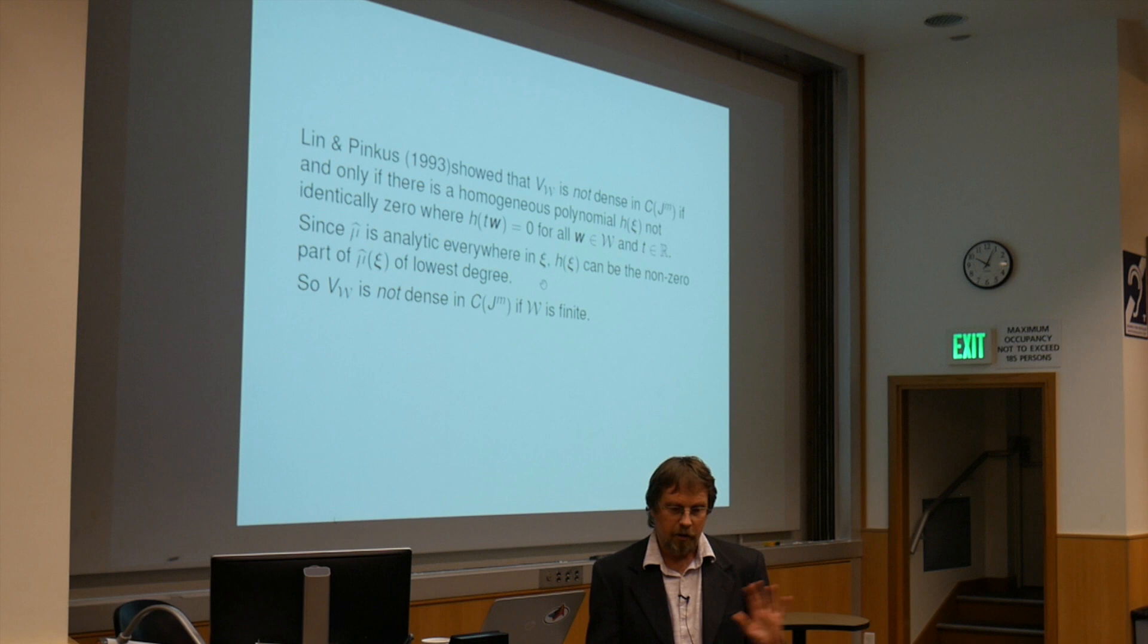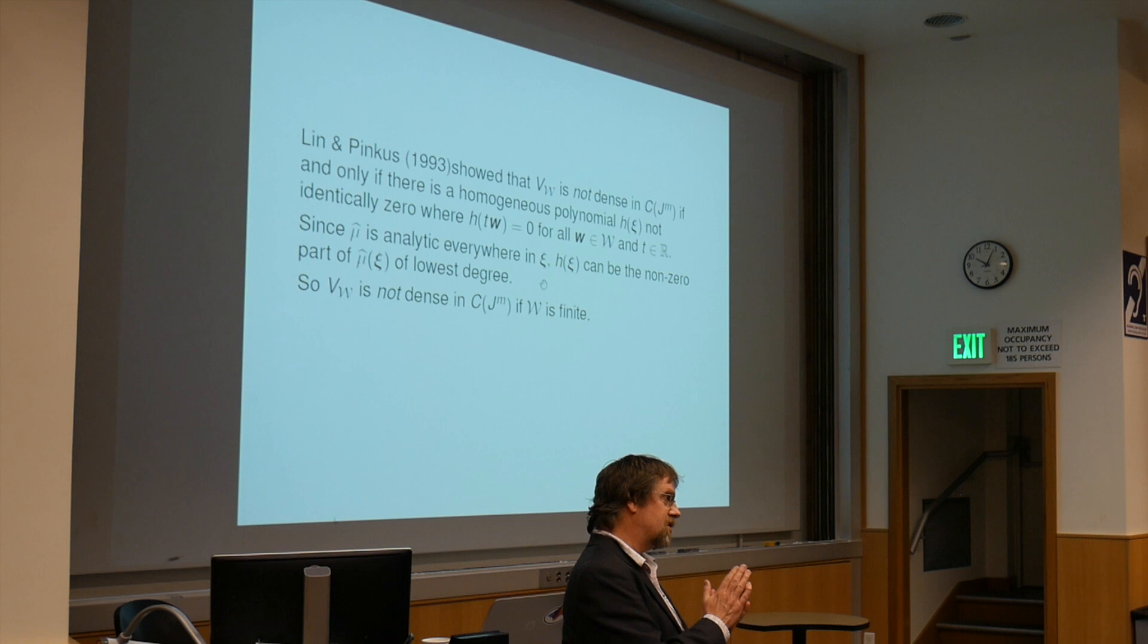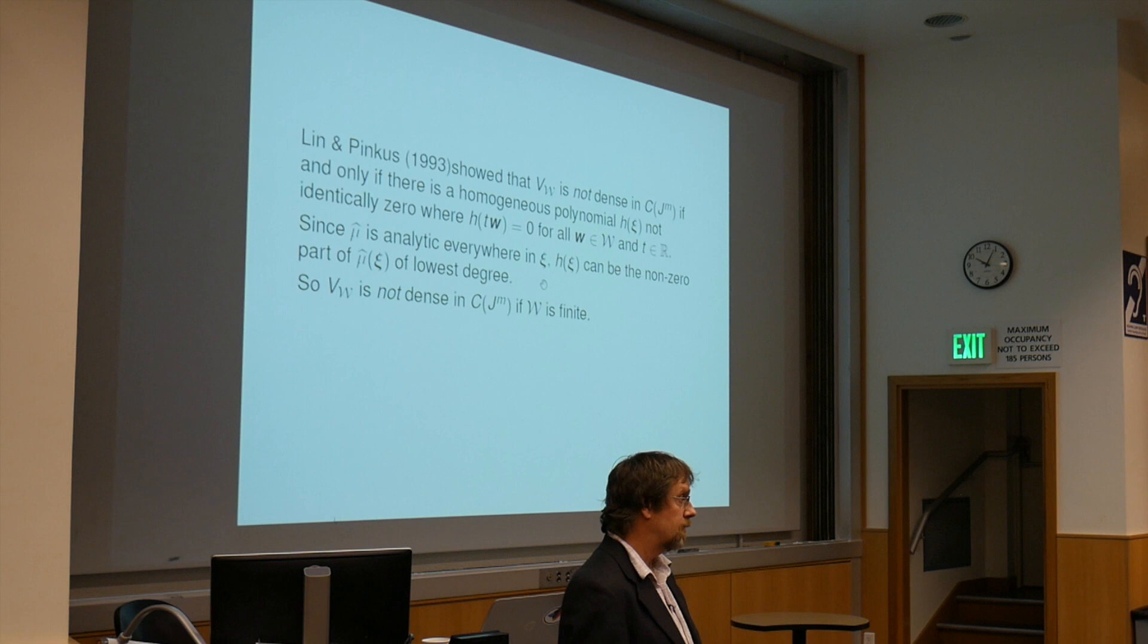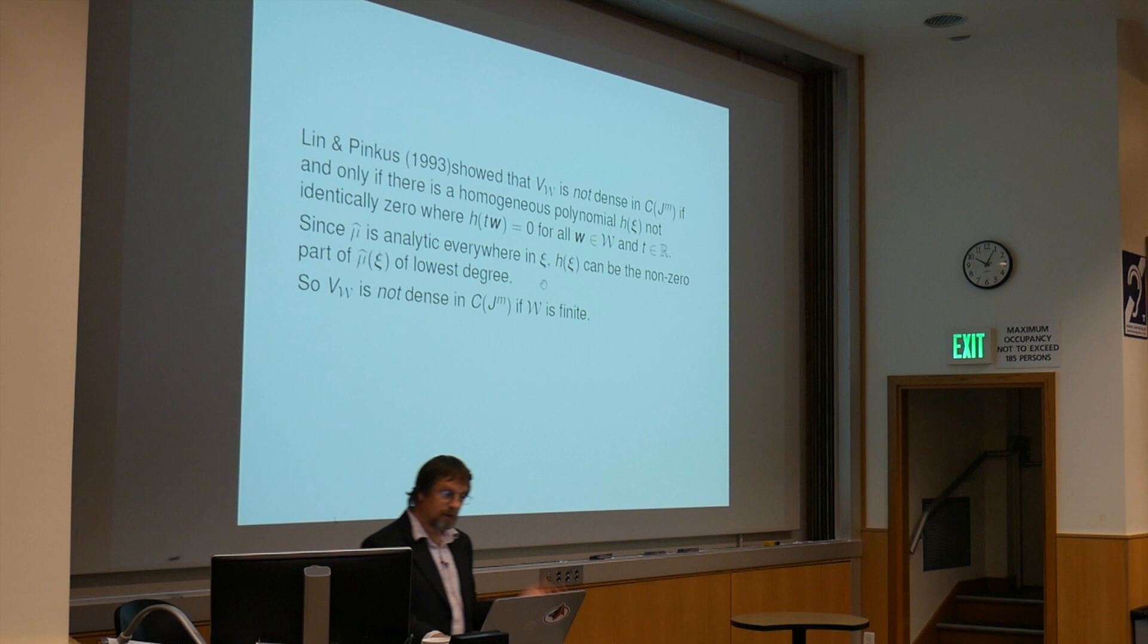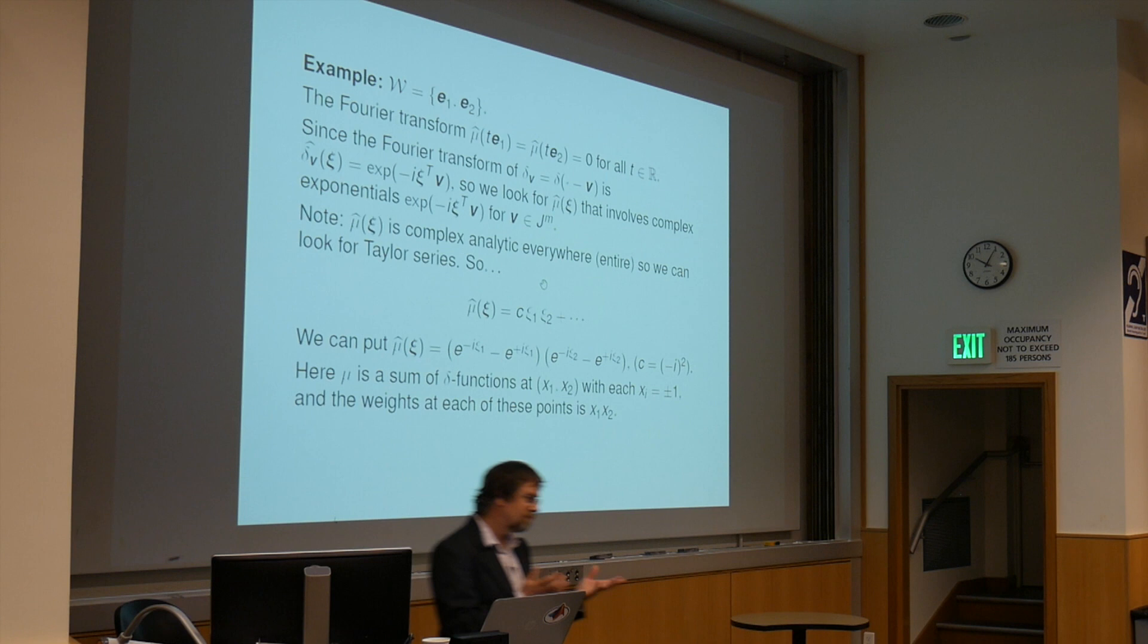Now first thing I should point out, it's been known for a while that this approximating subspace of ridge functions is not going to be dense if our set of weight vectors is finite. Doesn't matter what you pick, you're not going to fill up all continuous functions this way. Furthermore, they're able to show something. Since our Fourier transform is analytic, we can take the first, the smallest degree homogeneous polynomial, the leading term if you like, of the Fourier transform, and you just have to look at that. If there is a homogeneous polynomial that is non-zero at all these rays, then V_W is not dense in the space of continuous functions.